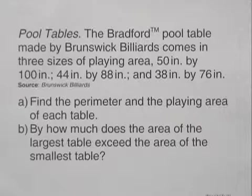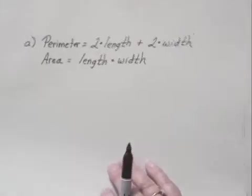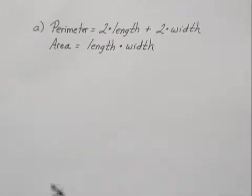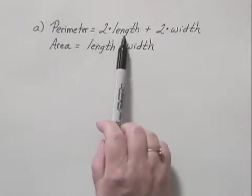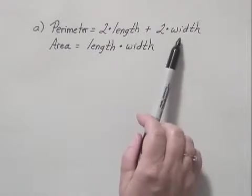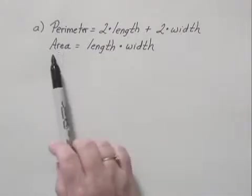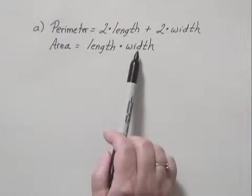For the first part, we can think of what equations we're going to use. We can remember that perimeter of a rectangle is 2 times the length plus 2 times the width, and the area of a rectangle is length times width.